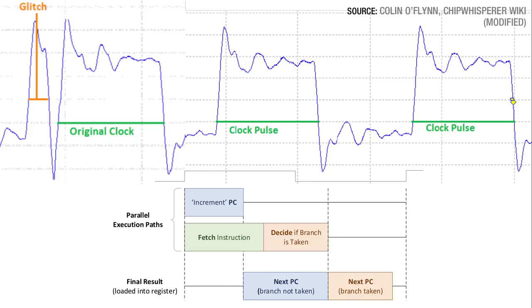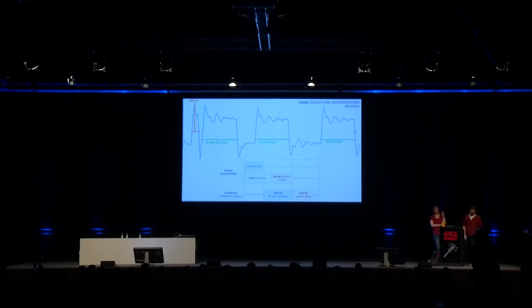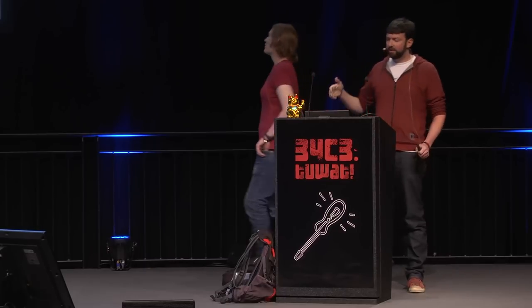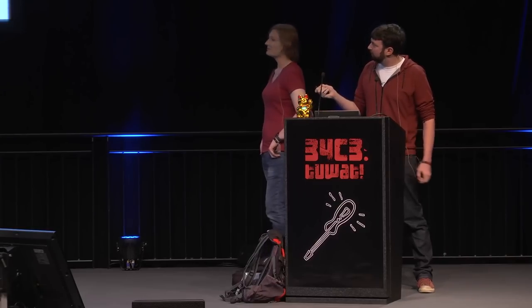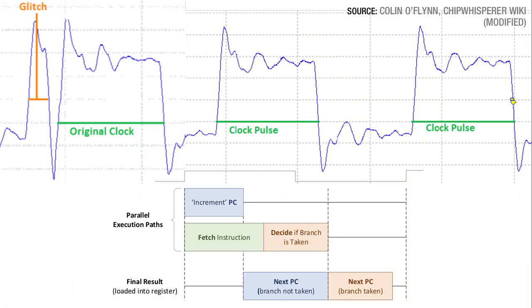Quick show of hands — who has glitched something before? I was in everyone else's shoes until very recently. There are two key types we'll talk about: clock glitching and power or voltage glitching. With clock glitching, you have these nice clock pulses. The way many people visualize what happens inside a processor is that everything happens as soon as the clock pulse arrives, but realistically it happens in stages — increment the program counter, decode the instruction, work out what it's going to do.